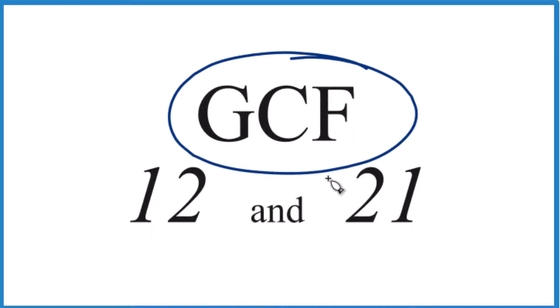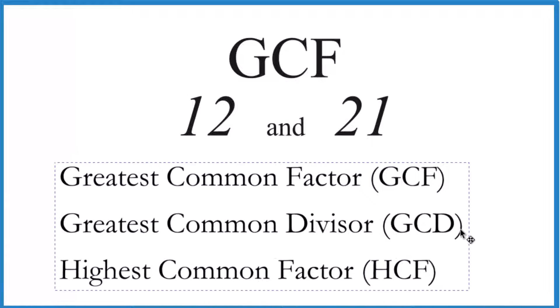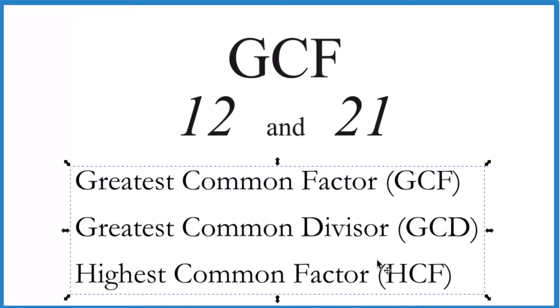Let's take a look at the GCF, the greatest common factor for 12 and 21. The GCF is sometimes called the greatest common divisor or highest common factor. These are the same thing. Let's go with GCF here.